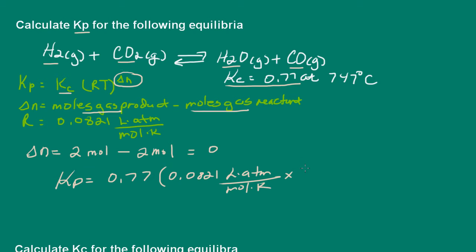And if there's a problem, my units aren't going to cancel properly. So the temperature is 747 degrees Celsius. So that is the same as 1020 Kelvins. And then delta N is zero, is the exponent. But remember, anything to the zero power is equal to one. So in this case here, Kp is equal to 0.77 or equal to Kc.